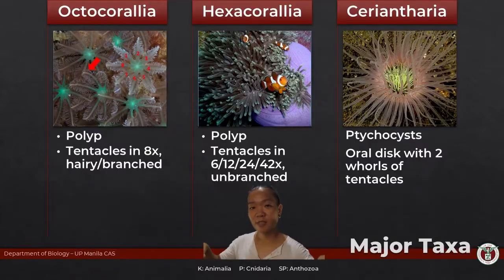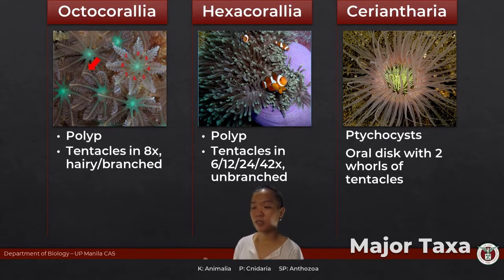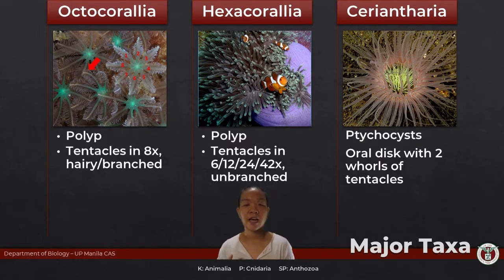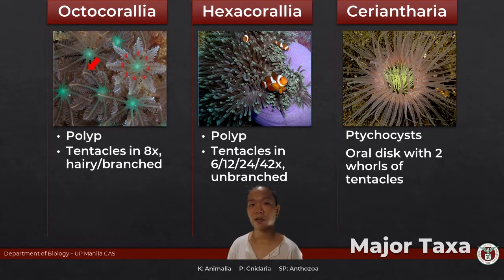All members of Anthozoa are exclusively in the polyp form. Their medusa stage is poorly studied or virtually absent — it's almost never seen in their life cycle. So what we see in the water are all polyps, which is why they are called Anthozoa — flower animals.